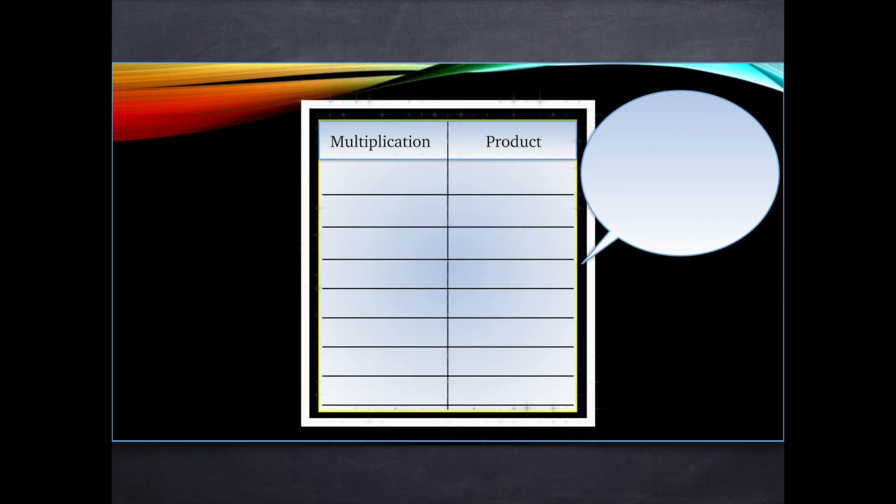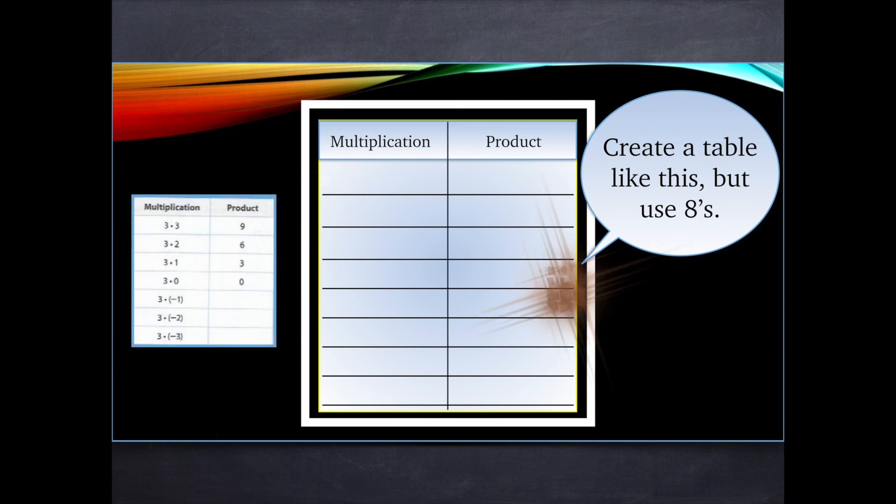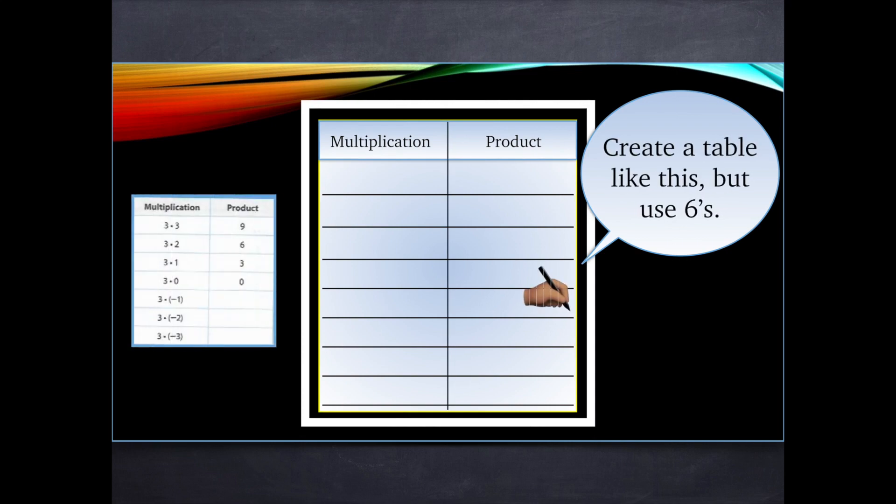And then I want you to do the same thing again, this time with eights. So we'll do the exact same thing. And we'll do some negatives later too, but for now just eights. And then one more, and you'll use sixes. So those numbers are the ones that I want you to use, and that will be it.